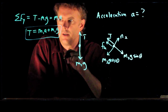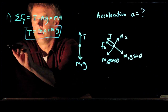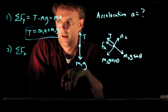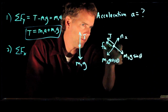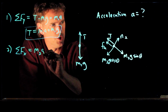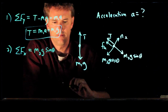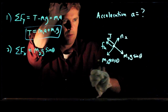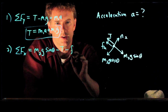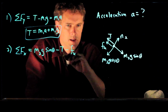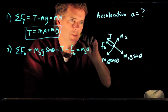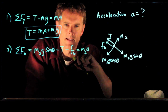What about number two? For number two we have the sum of the forces in the x direction. Remember we are in the rotated coordinate system, so the positive x direction is down to the right. So we have m2g sin theta, and then we have two forces opposing that: we have tension T and we also have frictional force Fk. And all of that is equal to the mass times its acceleration — we said it's going to accelerate down the plane.